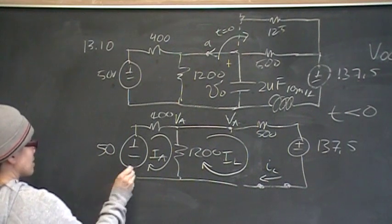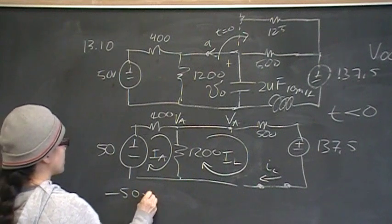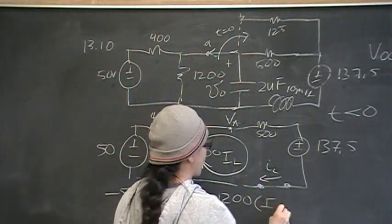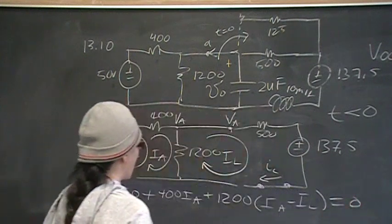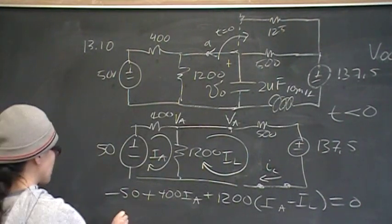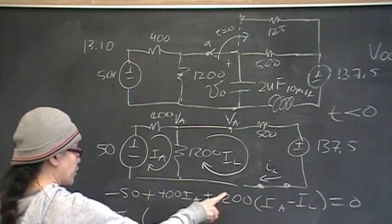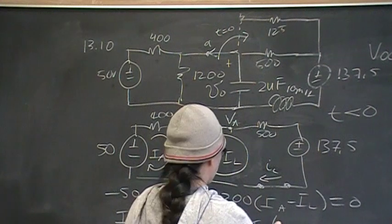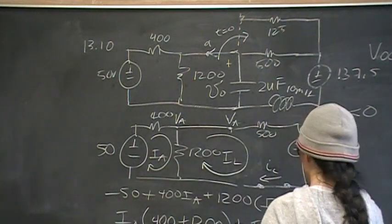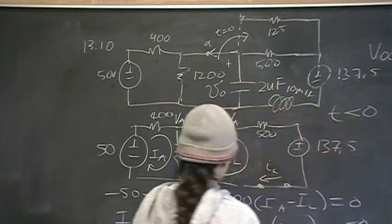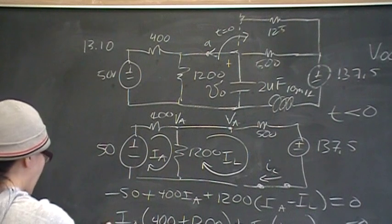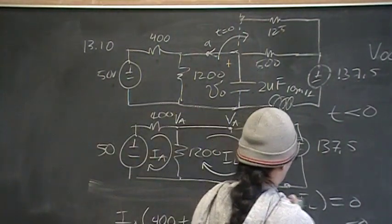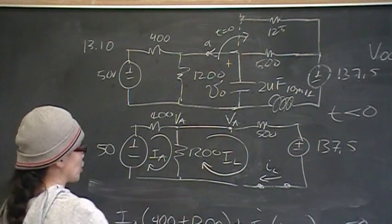So, mesh at IA is going to be minus 50 plus 400 IA plus 1200 times IA minus IL is equal to zero. So, now we group together our coefficients. I have IA, and my coefficient for that is 400 plus 1200 plus IL, and my coefficient for that is negative 1200, and that's equal to my constant, which is 50. That's equation number one. So, let me double check that. IA, 400 plus 1200 IL, negative 1200, and 50. Yes.